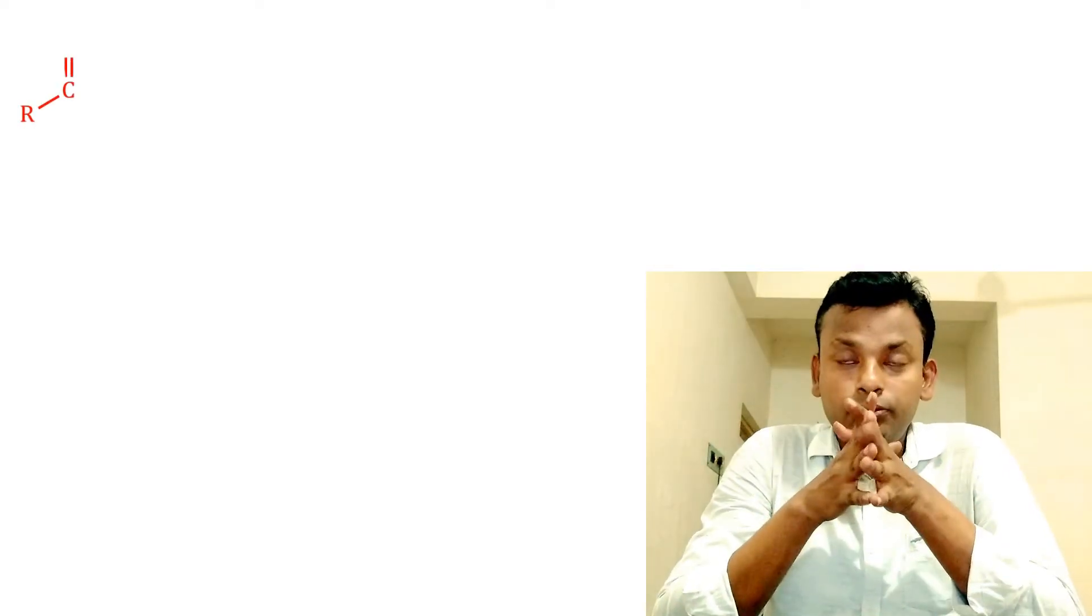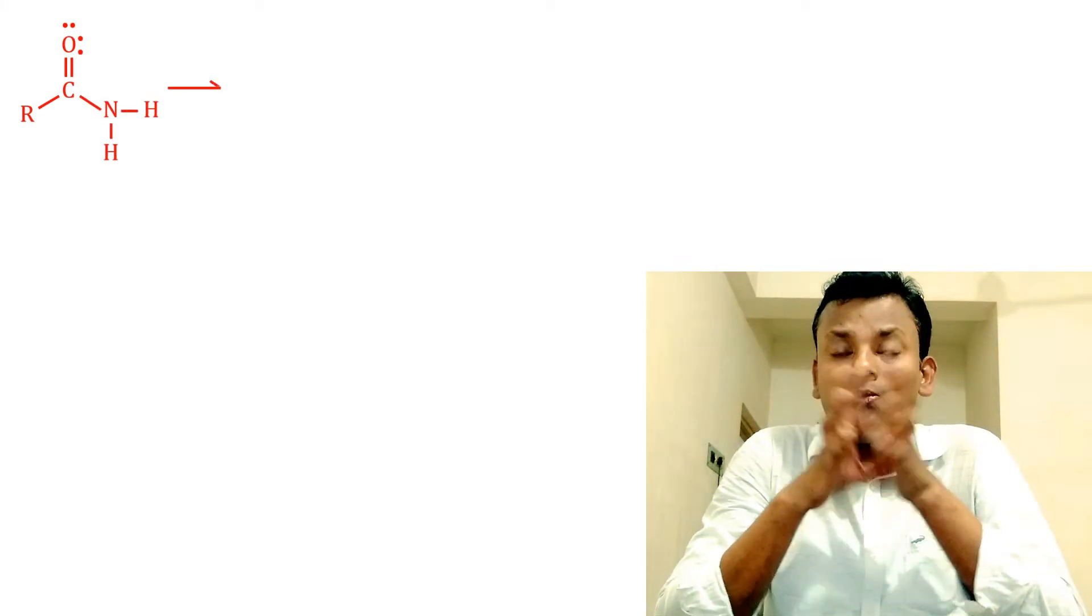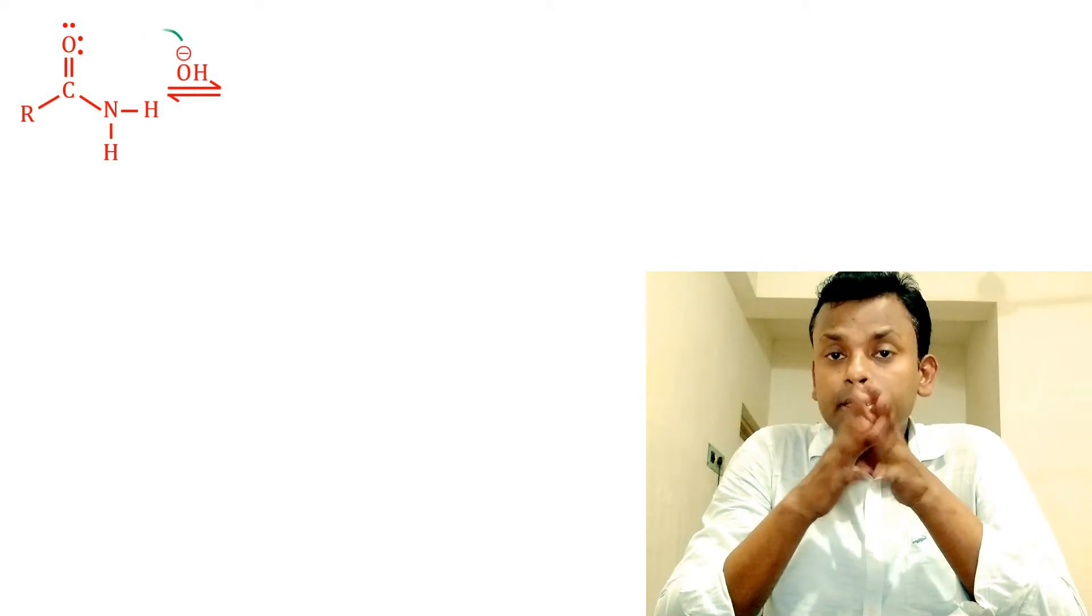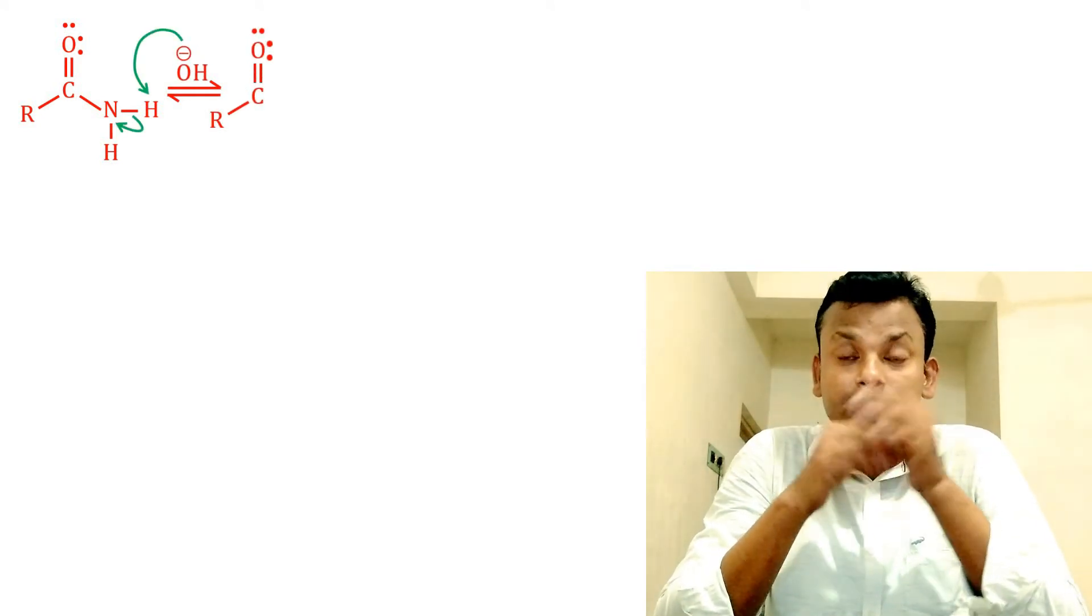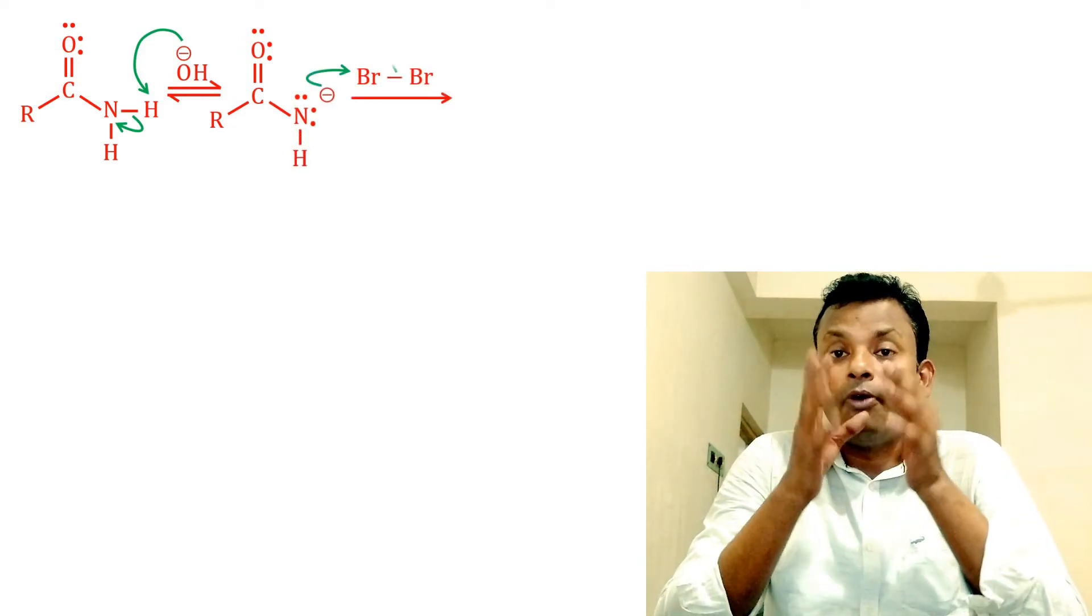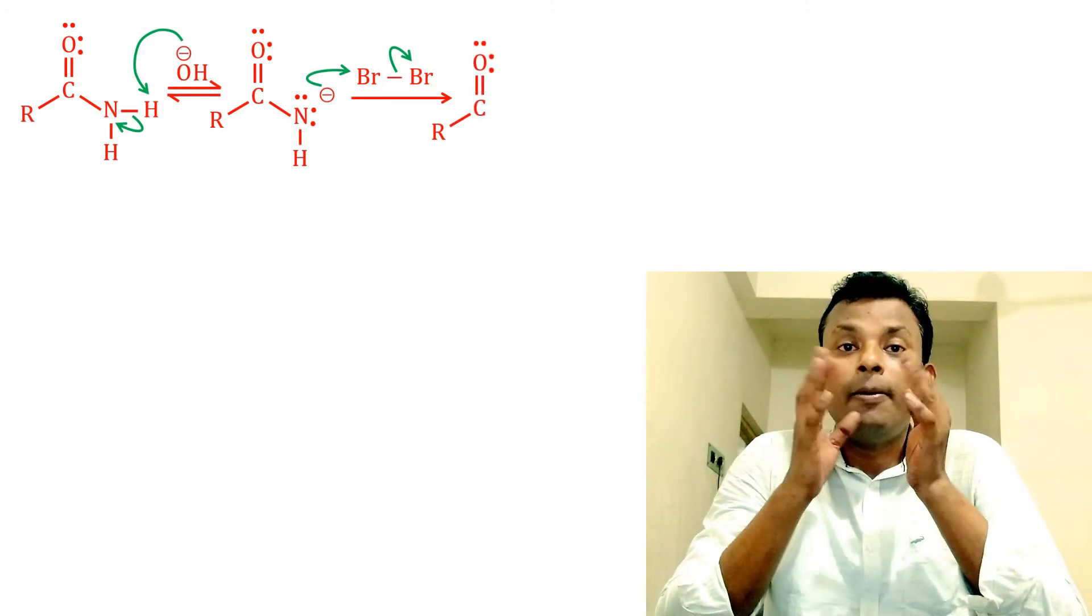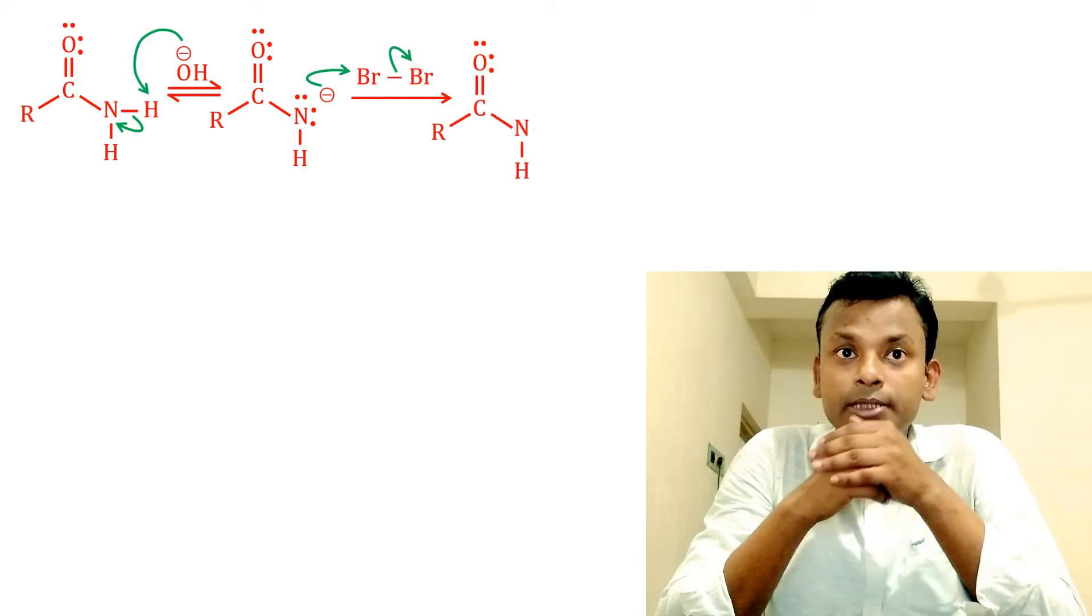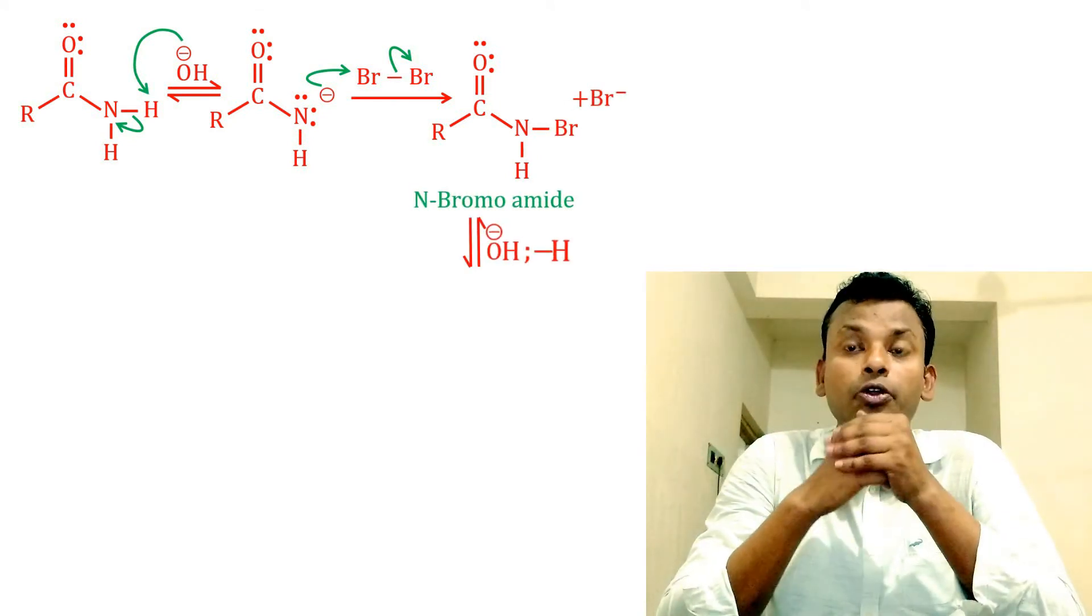Now let's discuss with reaction. RCONH2, that is the amide, base removes proton from amide gives RCONH-, that is the anion. This anion reacts with Br2 to form N-bromo amide. This is the base-promoted N-bromination. Next, OH- negative, that is base, removes a proton from N-bromo amide gives bromo amide ion.